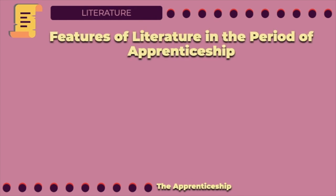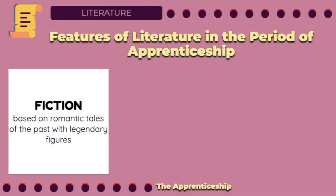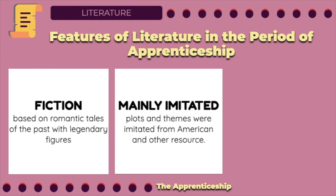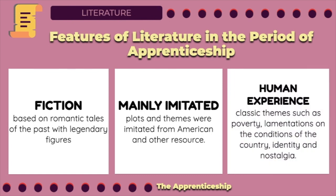Here are the distinguishing features of literature in the period of apprenticeship. First is fiction — short stories during this period were based on romantic tales of the past with legendary figures. Second, it is mainly imitated — Filipino fictionists strictly patterned their native techniques and style after popular American writers at that time, imitating plots and themes from American and other foreign sources. Lastly, literature is also based on classic themes such as poverty, lamentations on the conditions of the country, search of identity, and nostalgia.